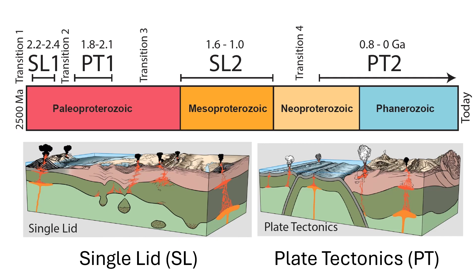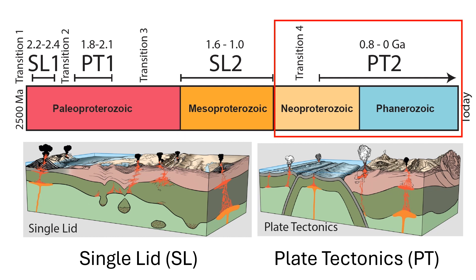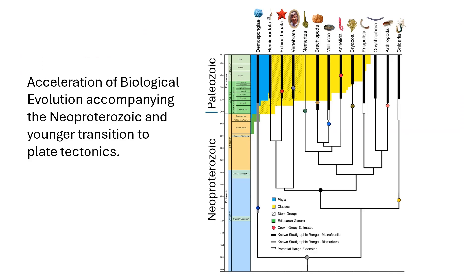We explore the growing evidence that a prolonged transition from an episode of active single lid tectonics in the Mesoproterozoic era, 1.6 to 1 billion years ago, to modern plate tectonics occurred in the Neoproterozoic era, 1 billion to 540 million years ago. The evolution of life was greatly accelerated by this transition, which stimulated many more complex organisms to evolve more rapidly compared to evolution rates during the preceding Mesoproterozoic boring billion single lid episode.